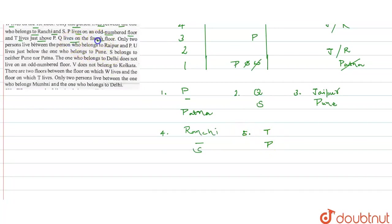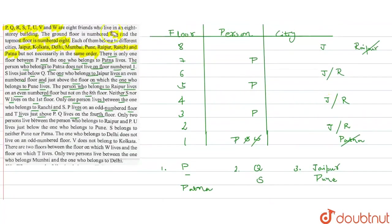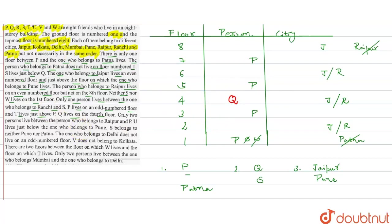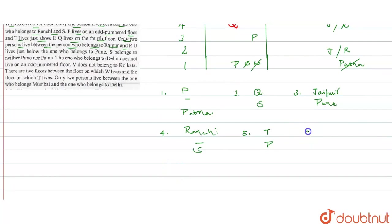Q lives on the fourth floor, so Q is fixed on floor 4 — the fourth floor is now booked. We write Q on the fourth floor. Next, only two persons live between the one who belongs to Raipur and P, so there will be exactly 2 persons between Raipur and P.